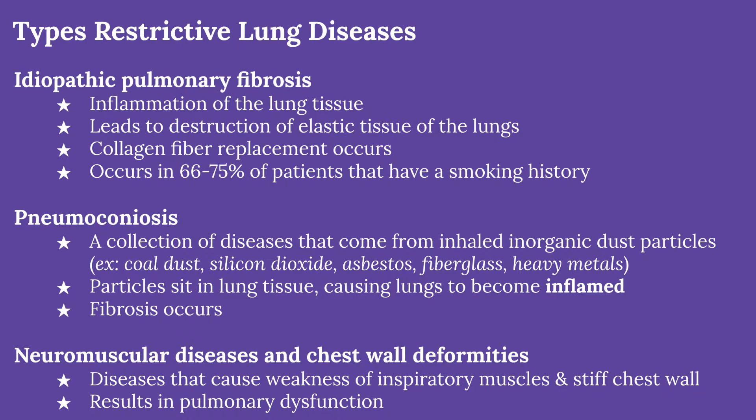There are three main types of restrictive lung diseases. The first is idiopathic pulmonary fibrosis, a disease in which the lung tissue becomes inflamed and causes damage to the lung's elasticity. When this tissue becomes damaged, it gets replaced with scar tissue made of thick bundles of collagen fibers.